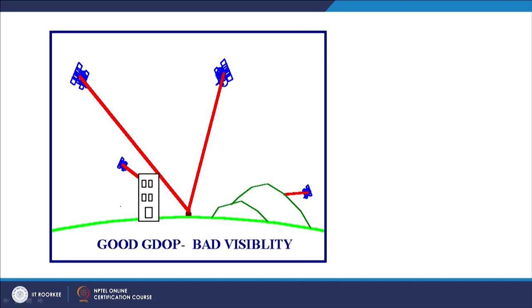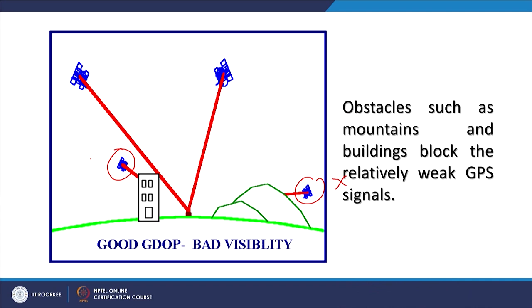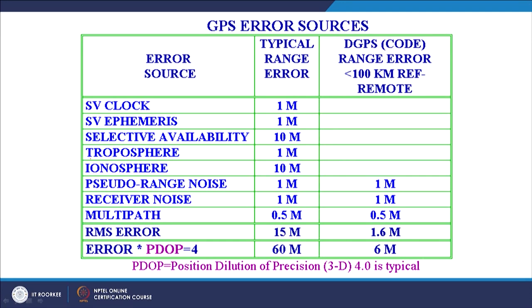Multipath and visibility obstructions have also been discussed. If a satellite expected per the almanac is behind mountains or buildings, no signals come through. Obstacles such as mountains and buildings block the relatively weak signals. Different error ranges include: ±1 m for SV clock, ±1 m for SV ephemeris, and selective availability (currently disabled, so the 10-meter error is completely gone). Other errors come from multipath and similar sources. This brings to the end of the discussion on how position is determined through GNSS receivers.